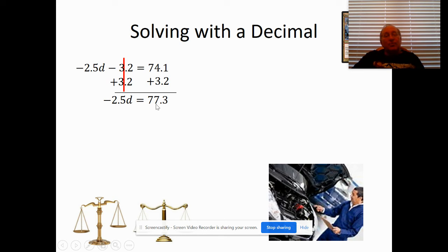Well, what I do now is, seeing how I'm multiplying d by negative 2.5, I'll do the opposite of multiply, which is divide. So I'm going to divide by negative 2.5.